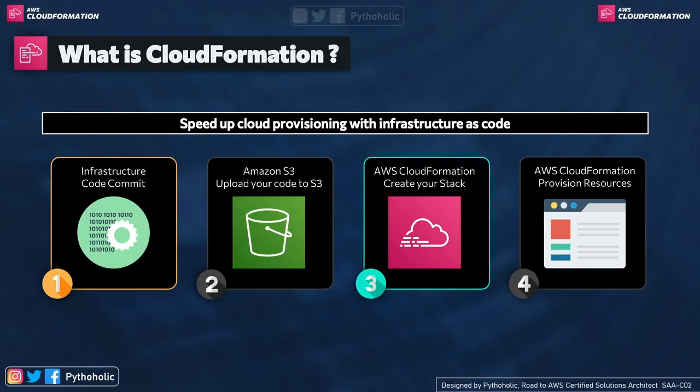These are the steps. The first one is infrastructure code commit — this is the most important step, where we write the code for our deployment from scratch using the CloudFormation template format. You can make use of JSON or YAML and save it with the extension .template, .json, .txt, or .yaml. The second step is uploading the code to Amazon S3 — you can use code stored on your local machine or pull it from the S3 bucket.